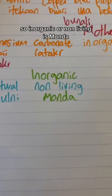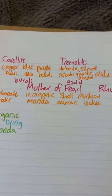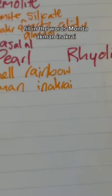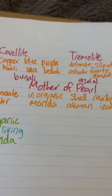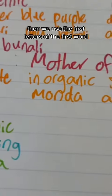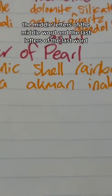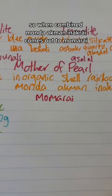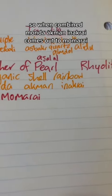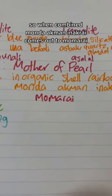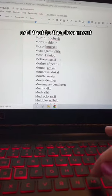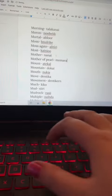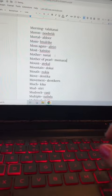So inorganic, or non-living, is M-O-N-D-A. We fill in the words: M-O-N-D-A, A-K-M-A-N, I-N-A-K-R-I. Then we use the first letters of the first word, the middle letters of the middle word, and the last letters of the last word. So when combined, M-O-N-D-A, A-K-M-A-N, I-N-A-K-R-I comes out to M-O-M-O-R-I. Add that to the document — M-O-M-O-R-I.